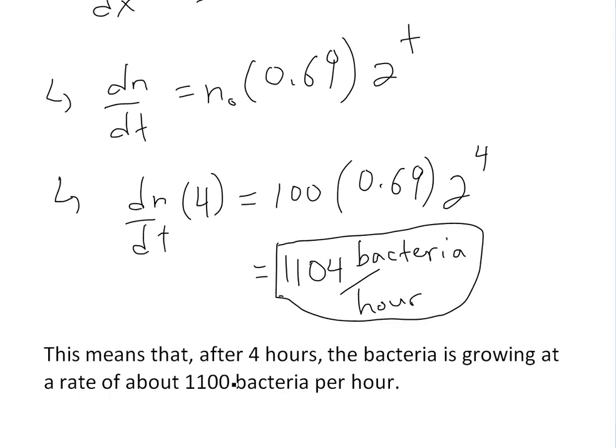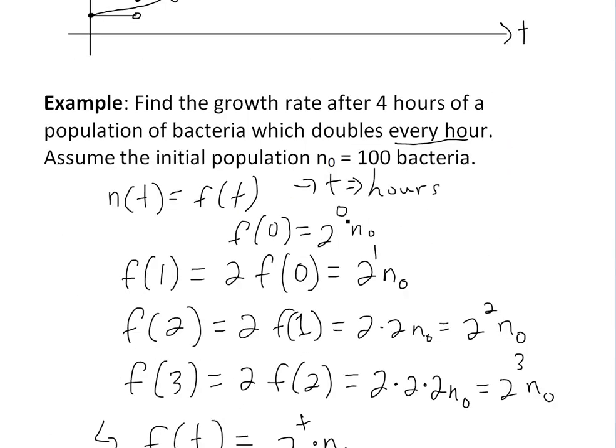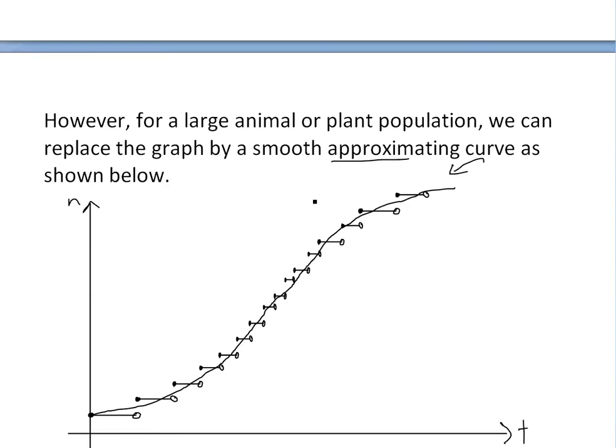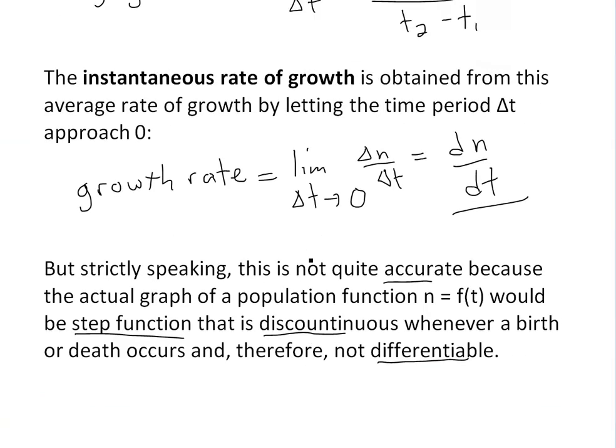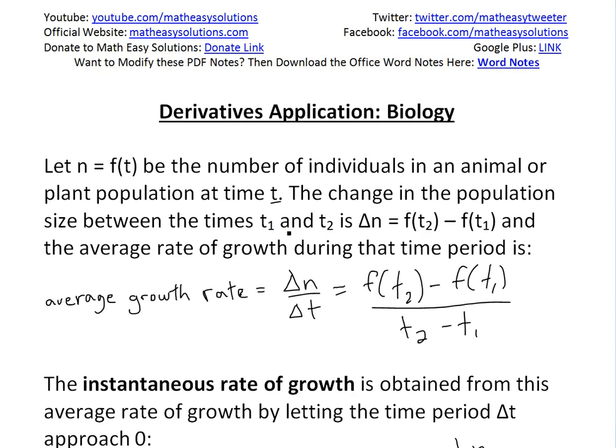Here I've typed out what I just said. After four hours, bacteria is growing at a rate of about 1,100 bacteria per hour. This is just an estimate because we're using 0.69. Anyways, that's all for today. I hope you learned from this example and this application of derivatives in biology. You can see my other videos on derivative applications. And like always, you can download these exact notes in the Dropbox link below. Thanks for watching and stay tuned for another Math Easy Solution.